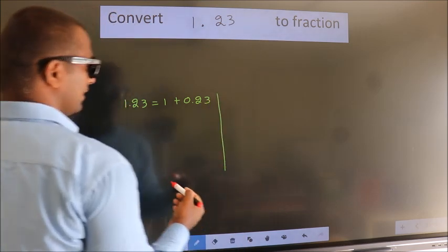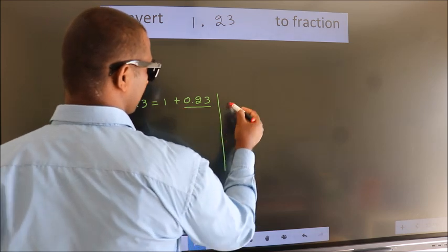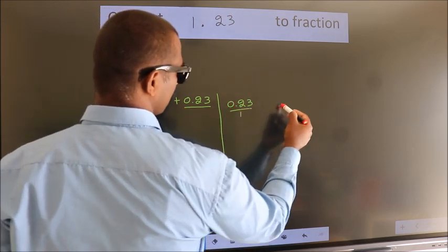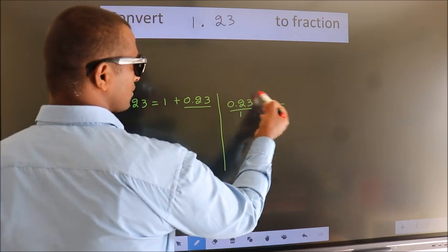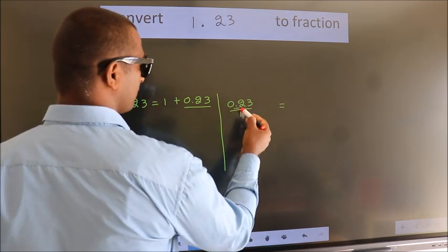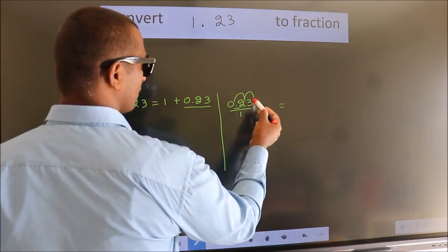Next, we should convert this to a fraction. So 0.23. To convert this to a fraction, we have to move the decimal after two numbers.